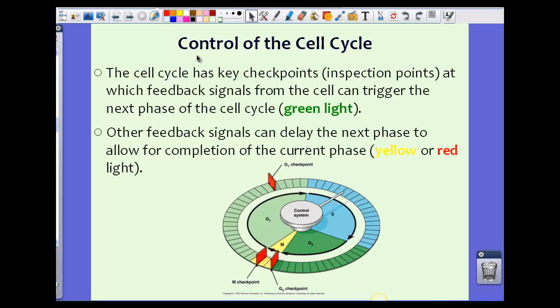Now there's a certain control of the cell cycle. The cell cycle has key checkpoints, also known as inspection points, at which feedback signals from the cell can trigger the next phase of the cell cycle. This is kind of like a green light.